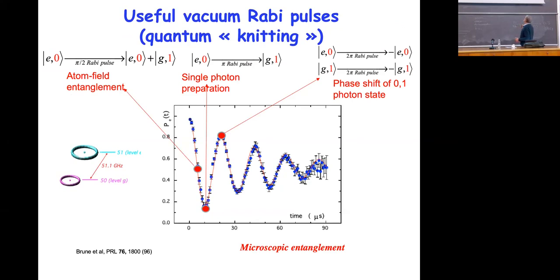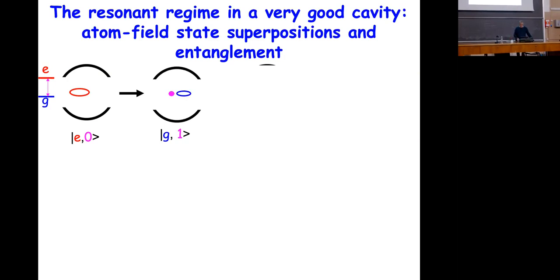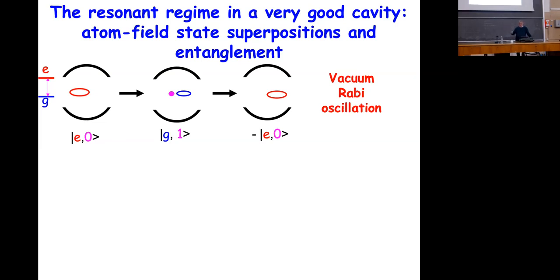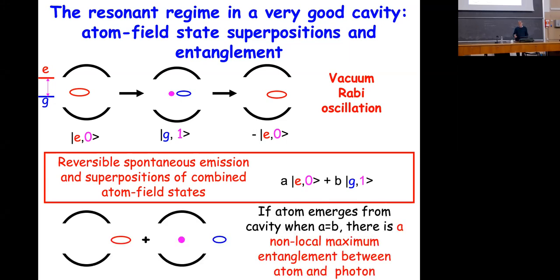You have a phase change: you go from |e,0⟩ to −|e,0⟩, and from |g,1⟩ to −|g,1⟩. This is because your system is a spin, and when you make a two-pi rotation on a spin you come back to the same state but with a phase shift. To find exactly the same state you have to make a four-pi rotation and not a two-pi rotation. This two-pi rotation which phase-shifts the quantum state is useful in quantum information, as we will see in a moment. So to summarize: you start from the atom in the excited state with zero photons; after a pi pulse you get the atom in the lower state and one photon; after a two-pi pulse you are back in the excited state with a phase shift. This goes on forever in principle if you have no relaxation.